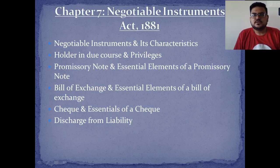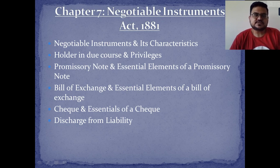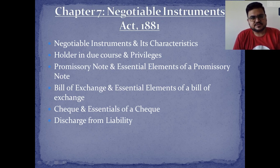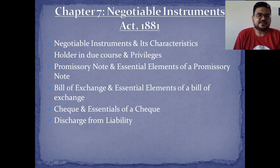Hello students, we'll continue from where we left in the previous class. The topic we are going to discuss is the Negotiable Instruments Act 1881, chapter number seven. We will cover: the meaning of negotiable instruments, their characteristics, holder in due course and privileges, promissory note and its essential elements, bill of exchange, cheque essentials, and discharge from liability.